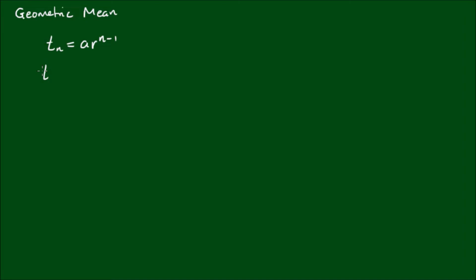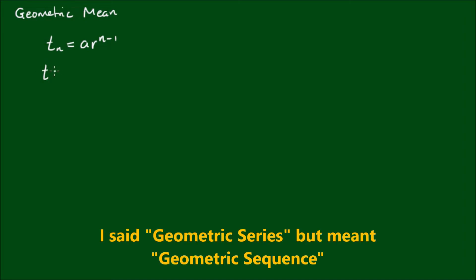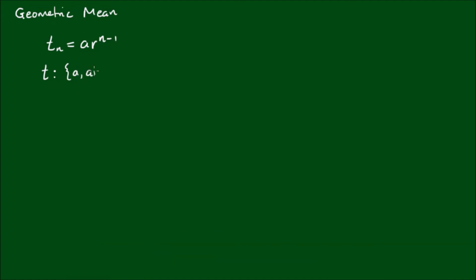So to write that out, a geometric series is T such that we have a set of numbers starting with a, ar, ar squared, ar cubed, and so on and so forth. So we'll label this as T1, T2, and T3.